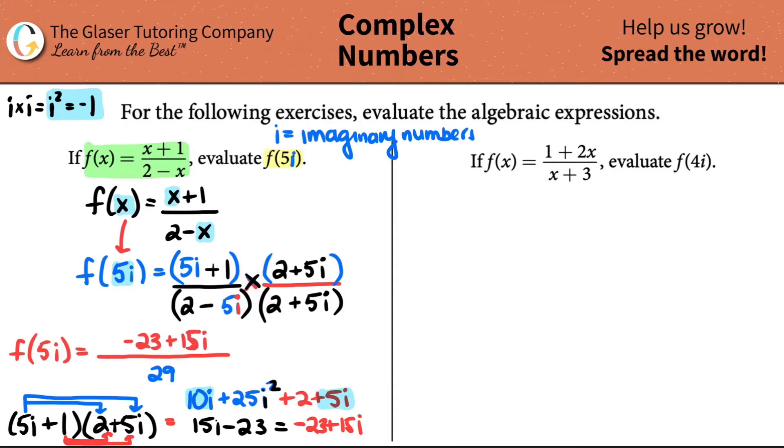And this whole thing now goes for the top. Negative 23 plus 15i over 29. And now I just look, can I simplify this? I got a 23, a 29. No, those are prime numbers. So this would be the answer to the first one. Let's do the same type of concept to the second one.